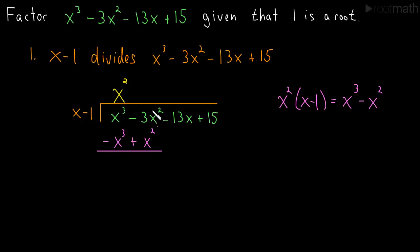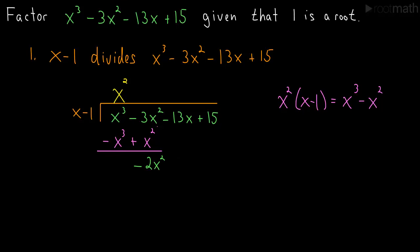Now we do the subtraction: x cubed minus x cubed is zero, that goes away. Then minus 3x squared plus x squared gives us minus 2x squared. And the minus 13x comes down, so we now have minus 2x squared minus 13x. We've gotten rid of the x cubed term.